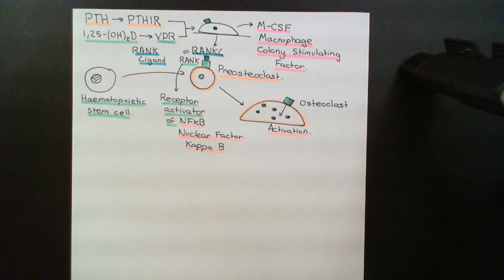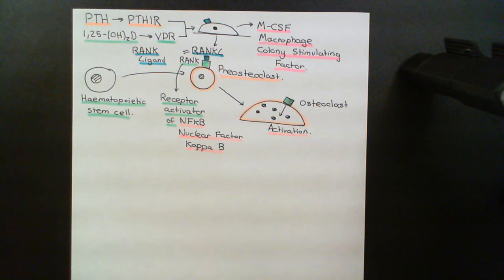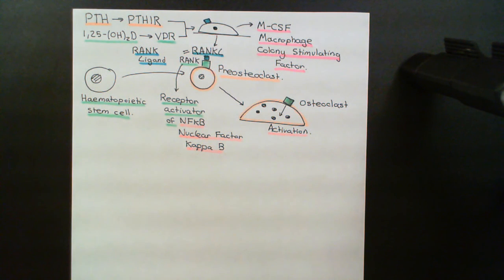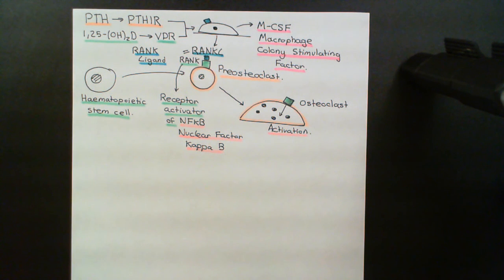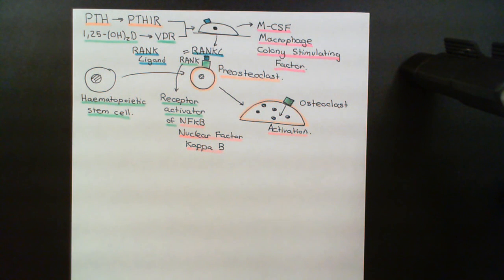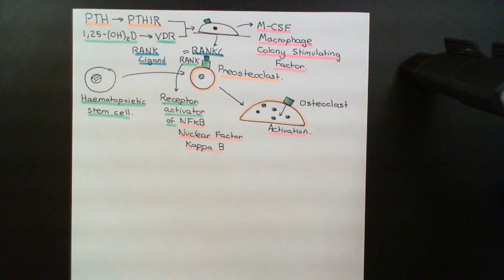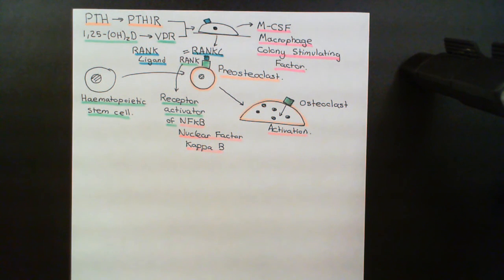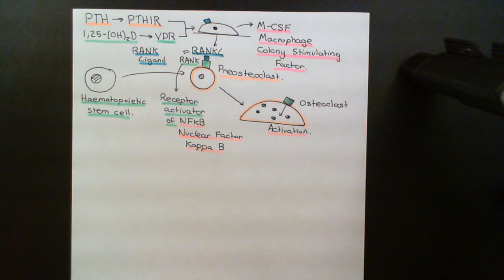The final thing to discuss is the effect on the gastrointestinal tract. Parathyroid hormone has no direct effect on the GI tract; it is 1,25-dihydroxyvitamin D that tells the gastrointestinal tract to absorb more calcium and also more phosphate — since the kidneys have excreted a lot of phosphate — to repair that temporary measure. The effects of 1,25-dihydroxyvitamin D on the gastrointestinal system will be discussed in the next video.